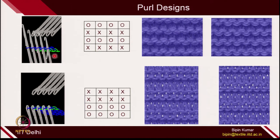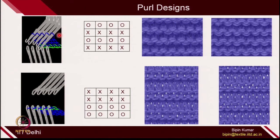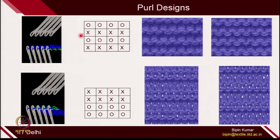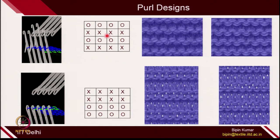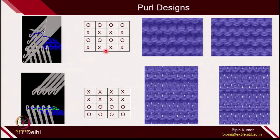If you see the animation: first, this course has been created on the front bed; then by loop transfer it is transferred to the back bed, and then the back bed makes one course. Then the back bed transfers the loop to the front bed, and the front bed creates the next course. Again the front bed transfers to the back bed, and the back bed creates back loops. This is how 1x1 pearl is created, and they look the same on both sides.